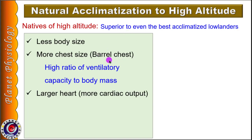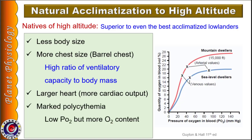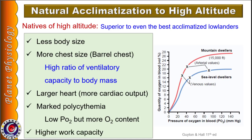Both these factors improve the ratio of ventilatory capacity to body mass. These people also have higher cardiac output due to their larger heart size, and marked polycythemia, so their oxygen content is more despite lower PO2. Arterial PO2 at sea level is 98 mmHg but in mountain dwellers it is just 40 mmHg, yet oxygen content in mountain dwellers is higher. Natives of high altitude have higher work capacity and are always superior to even the best acclimatized lowland dweller, as evident from Sherpas accompanying Himalayan trekkers.